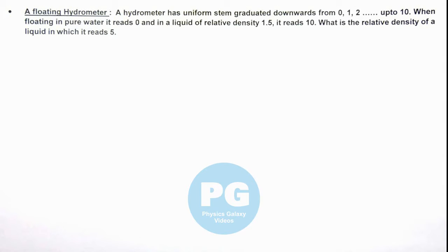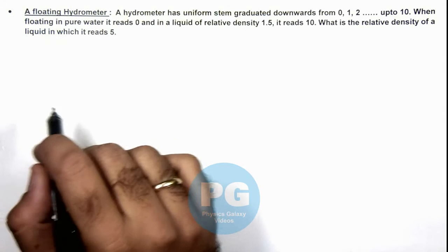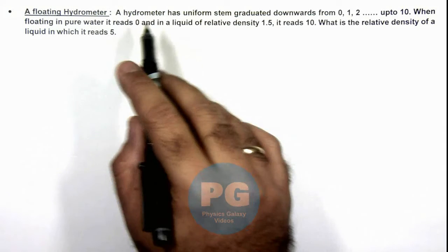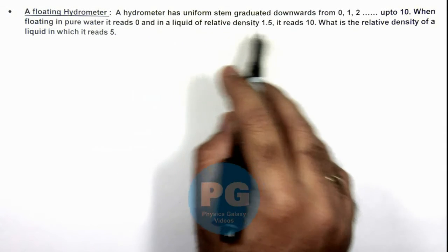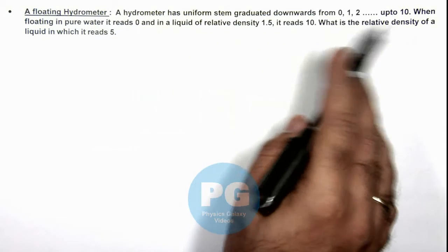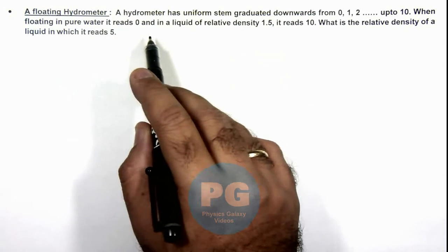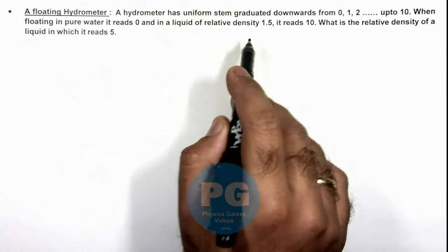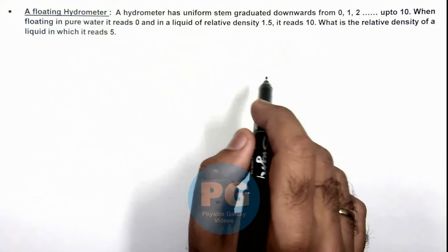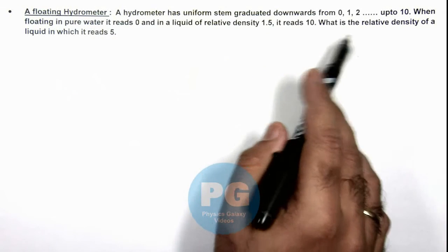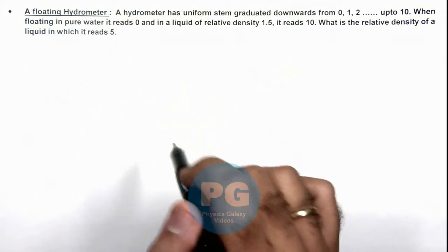In this illustration, we'll analyze a floating hydrometer. We are given that a hydrometer has uniform stem graduated downward from 0, 1, 2 up to 10 marks. When floating in pure water it reads zero, and in a liquid of relative density 1.5 it reads 10. We are required to find the relative density of a liquid in which it reads 5.